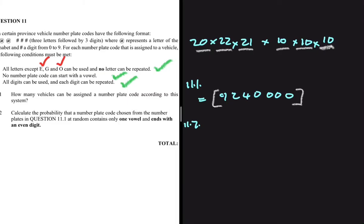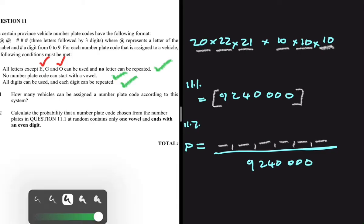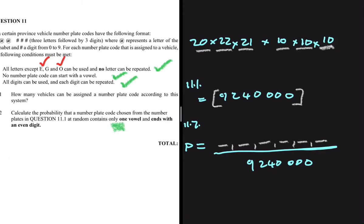Question 11.2 asks us to calculate the probability that a number plate code chosen at random from 11.1 contains only one vowel and ends with an even digit. The probability will equal the number of favourable outcomes across all six positions, divided by the sample space of 9,240,000. We need only one vowel.